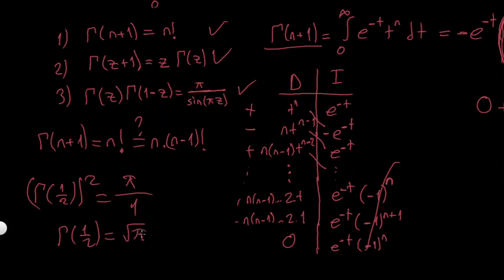This is the most important value of the gamma function. We know all values of gamma for integers, but we don't yet know it for arbitrary fractions — except for gamma(1/2). In general, it's not easy to calculate gamma values; for example, gamma(1/3) requires different formulas.